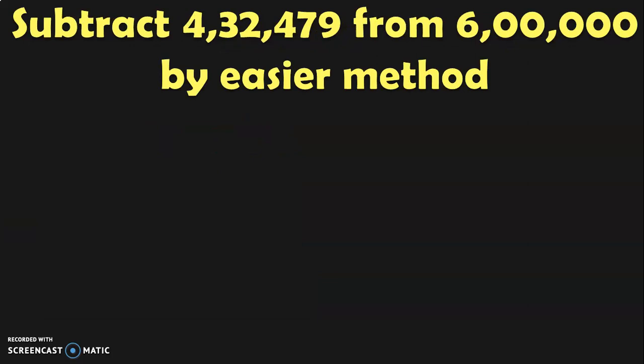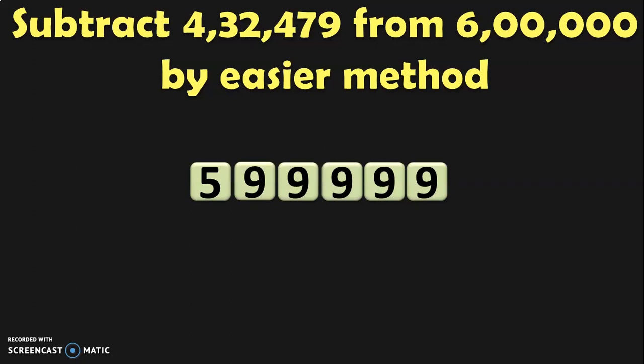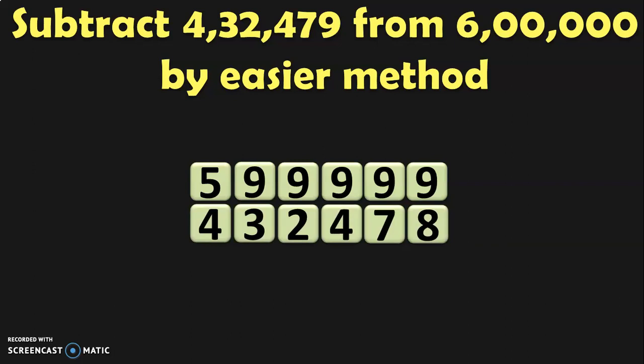Subtract 4,32,479 from 6 lakhs by an easier method. To do this subtraction, you subtract 1 from both numbers. When you subtract 6 lakh minus 1, you get 5,99,999. When you subtract 4,32,479 minus 1, you get 4,32,478. This type of subtraction becomes easier rather than having numbers with zeros, where there will be more borrowing. When you have numbers with all zeros and just a single leading digit, you can apply this method — subtract 1 from both numbers and do the subtraction easily.